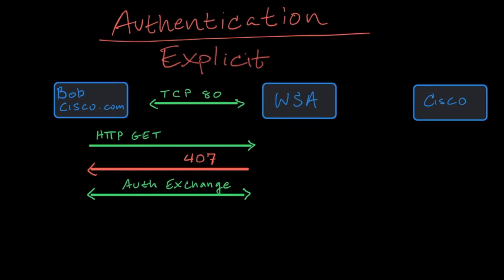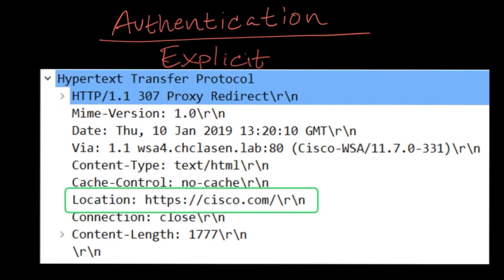Once the authentication process is completed, the WSA sends the GET request upstream to the real Cisco server. In the real world, since Bob only typed Cisco.com into his browser and not HTTPS Cisco.com, the server will return a 301 redirect that upgrades the connection to HTTPS and requires a TLS handshake before any data is exchanged.